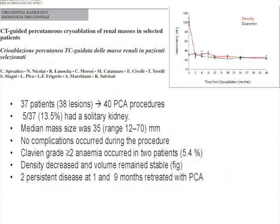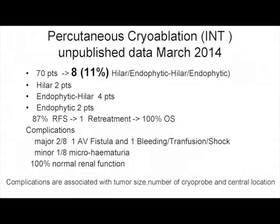This is our experience, and this is the particular experience in hilar endophytic renal mass. This lesion represents only 11% of older cases, but it's important to see the good results in outcome and tumor control. The major complications — arteriovenous fistula, shock, and transfusion in one patient — are associated with tumor size and the particular site of the lesion. Importantly, normal renal function was preserved in all patients.